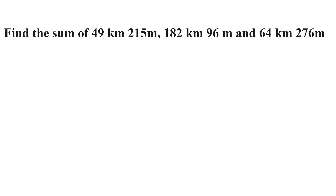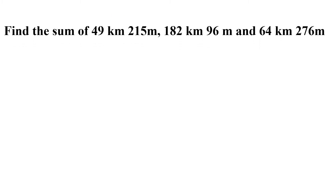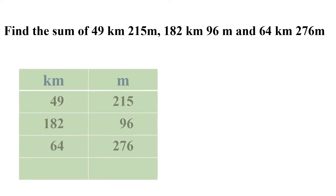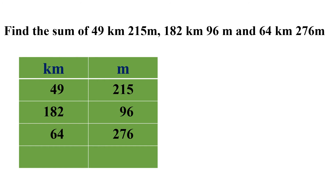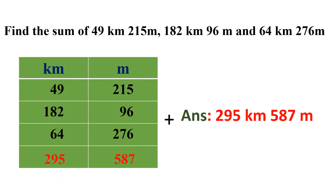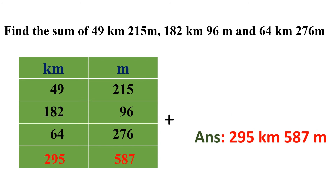Find the sum of 49 kilometers 215 meters, 182 kilometers 96 meters, and 64 kilometers 276 meters. The same way, write the numbers under kilometers and meters, put the plus sign, and start from the right hand side. You will get 587 on the meter side and 295 on the kilometer side. The answer is 295 kilometers 587 meters.